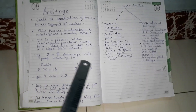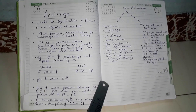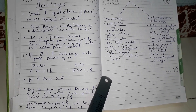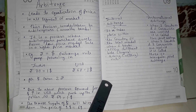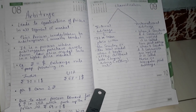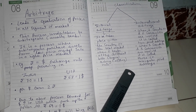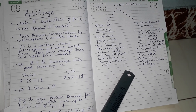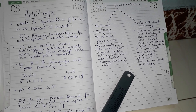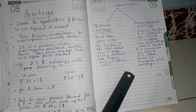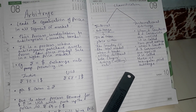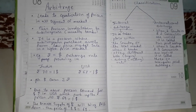There are two types of arbitrage. The first is internal arbitrage, which takes place within the local market between two banks. The second is international arbitrage, which takes place between two countries and two currencies — this is called two-point arbitrage. It can also take place between three countries and three currencies, which is called three-point arbitrage or triangular arbitrage.